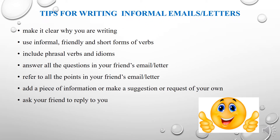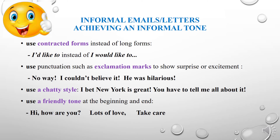Here are some tips for writing informal emails. Make it clear why you are writing. Use informal, friendly, and short forms of verbs. Include phrasal verbs and idioms. Answer all questions in your friend's email letter. Refer to all the points in your friend's email. Add a piece of information or make a suggestion or request of your own. Ask your friend to reply to you. To achieve an informal tone, use contracted forms instead of long forms — for example, use 'I'd like to' instead of 'I would like to'. Use punctuation such as exclamation marks to show surprise or excitement.